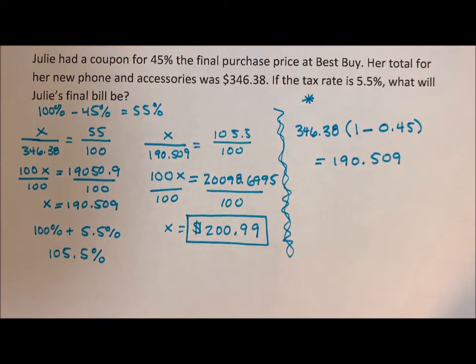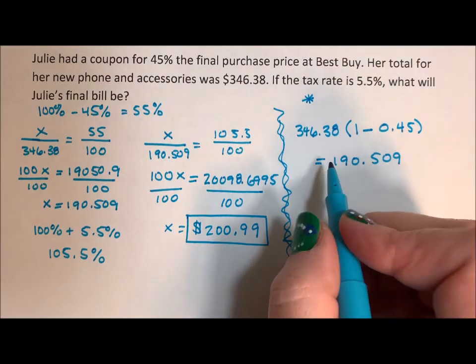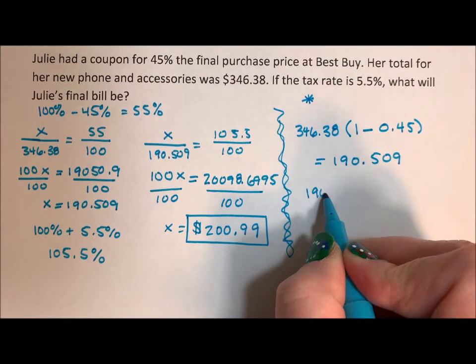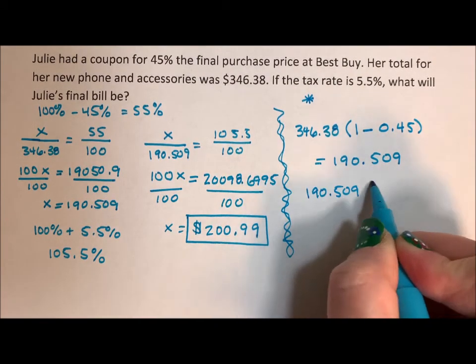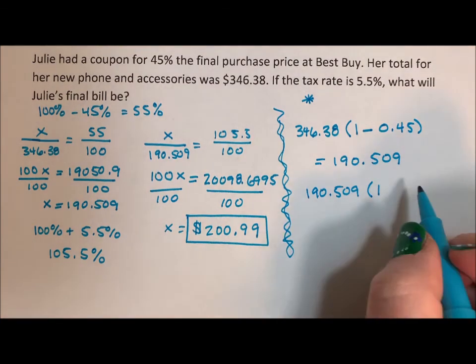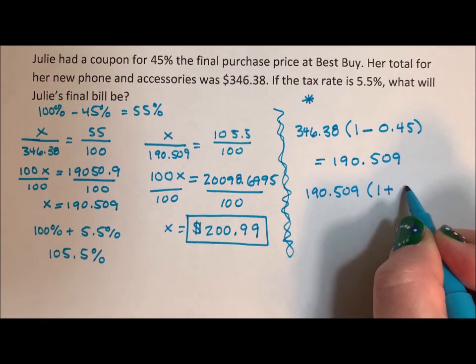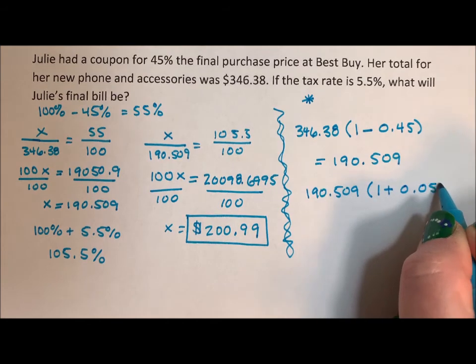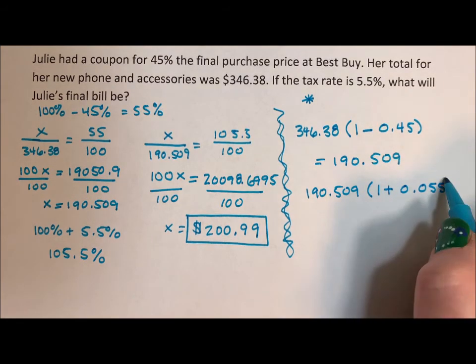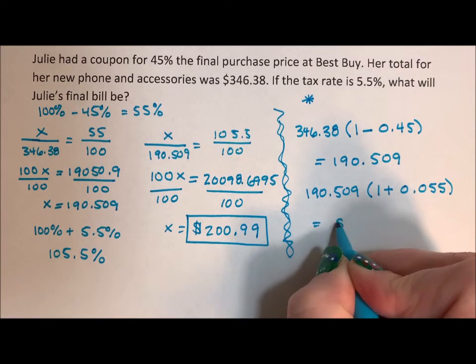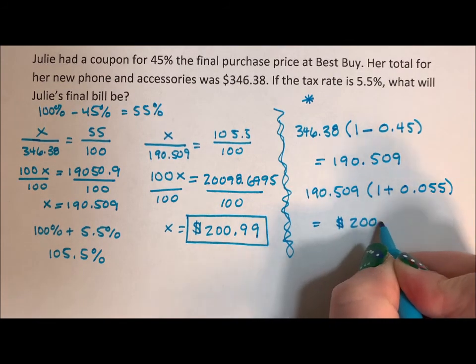Quite nice. Then for the tax, you take 190.509. Again, start with one representing 100% plus, and that's our tax rate. So 0.055. And you throw this into your calculator and what comes out is 200.99.